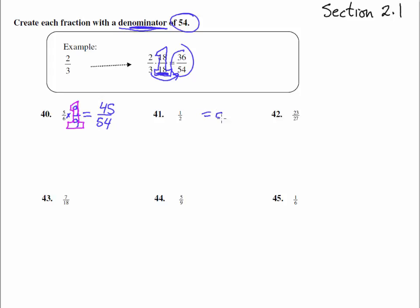So here 54 on the bottom, let me see, 2 times what, 54 divided by 2 is a 27. So we times by 27 on the top and the bottom and we get 27 over 54.